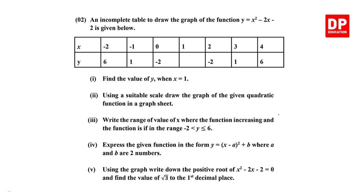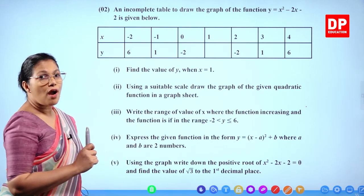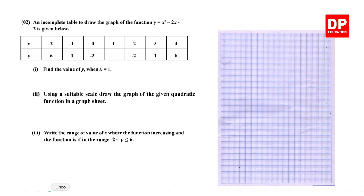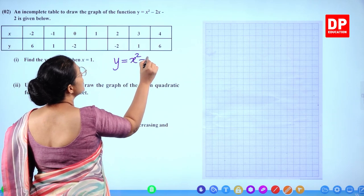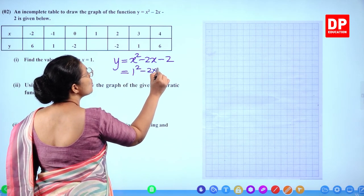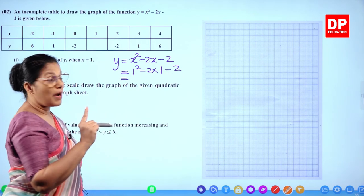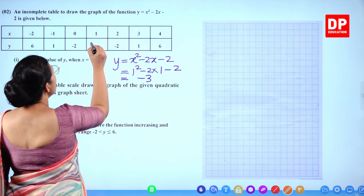Question 2: An incomplete table is given to draw the graph of the quadratic function y = x² − 2x − 2. The first part asks you to find the value of y when x = 1. Substitute x = 1: y = 1² − 2(1) − 2 = 1 − 2 − 2 = −3.